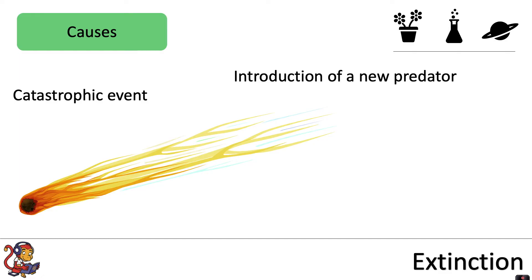Extinctions can also be caused by the introduction of a new predator. Where humans are travelling so much around the world, sometimes predators can be introduced by accident or on purpose to a new area, and that will change the dynamic of that whole ecosystem. That new predator could hunt on a prey species and cause it to become extinct, or it could out-compete another predator, again causing it to become extinct.